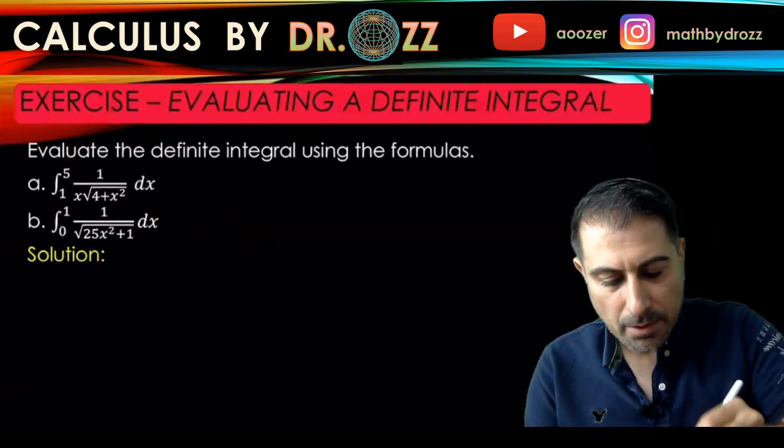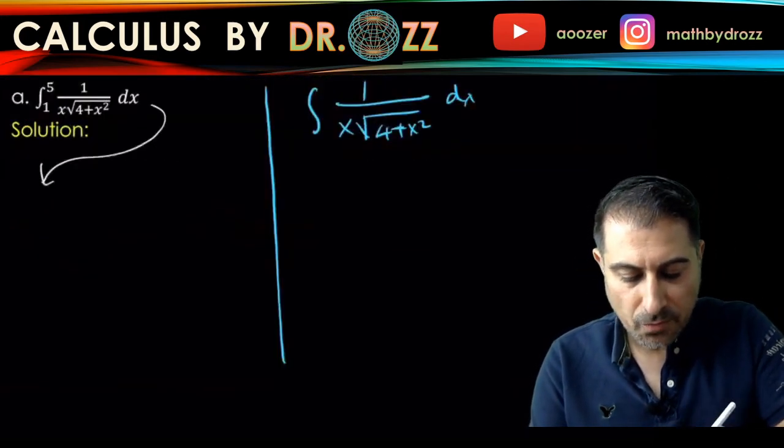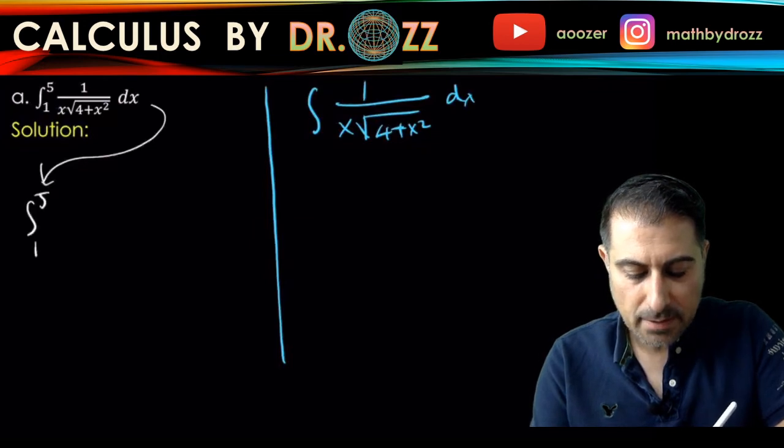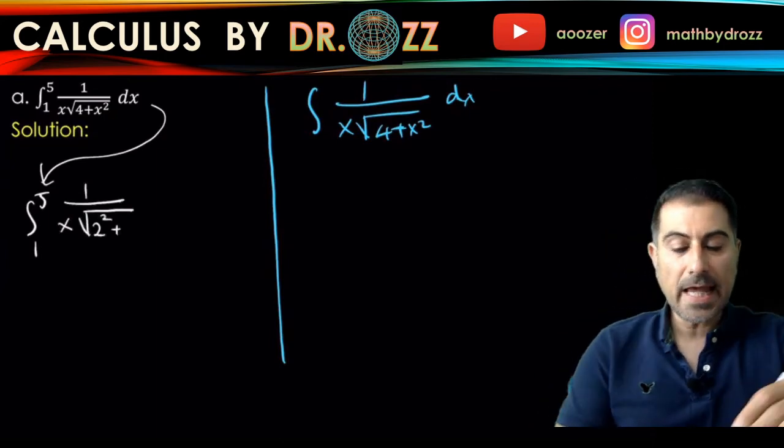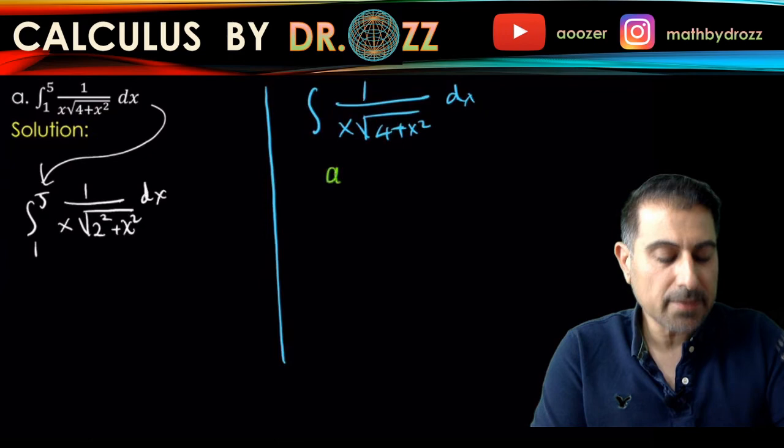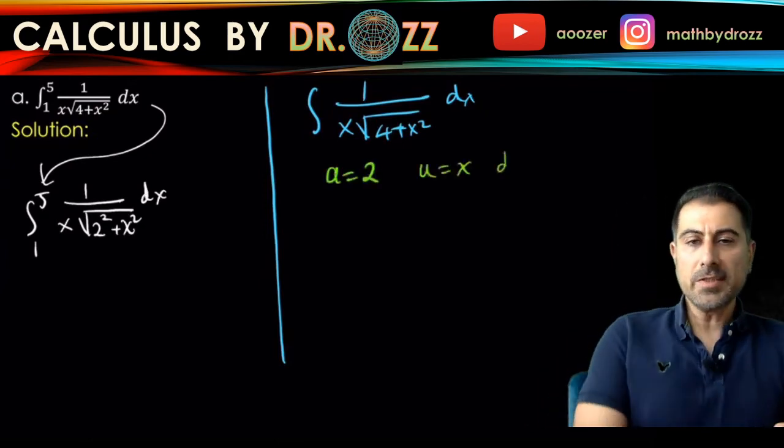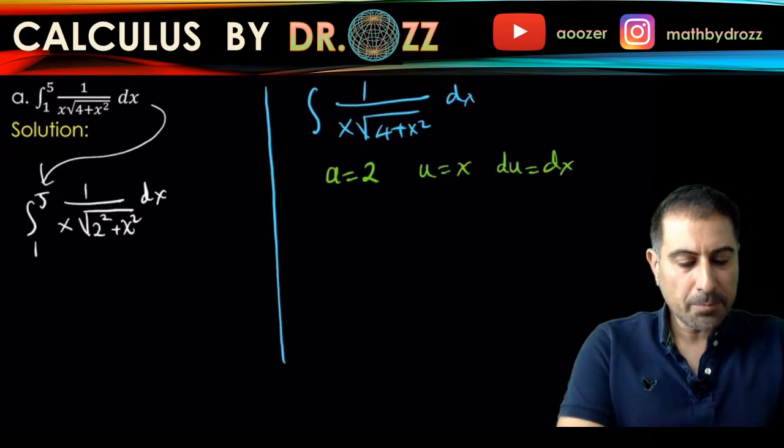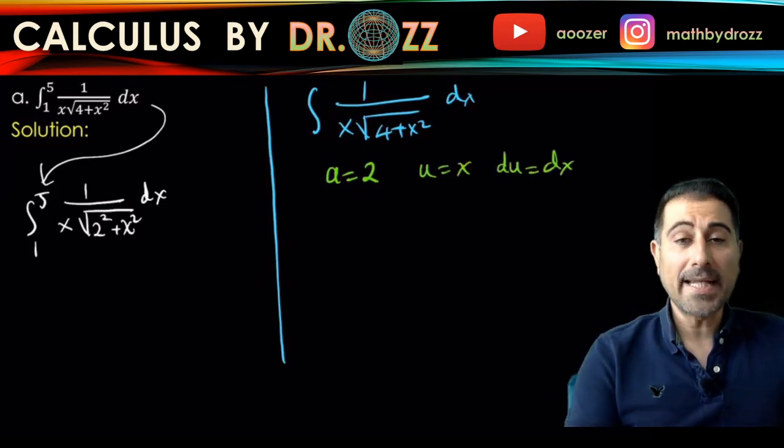So here, let me just rewrite this integral as integral from one to five, one over x, two squared plus x squared dx. So that makes a to be two. That makes a to be two and u to be x. So that du equals dx. I don't even need to have a separate u substitution applied to that because it's already in the form provided in the formula.